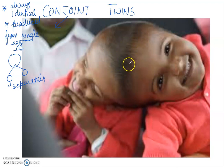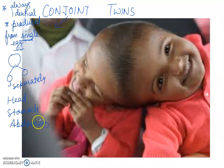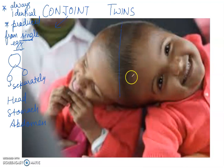Depending on the place the conjoined twins are joined — for example, the head — and the placement of their internal organs, blood circulation, nervous system, and many other parts of the body can be affected. In some rare cases, conjoined twins have been successfully separated surgically. For example, with the help of surgery, we can separate the heads of these two babies.